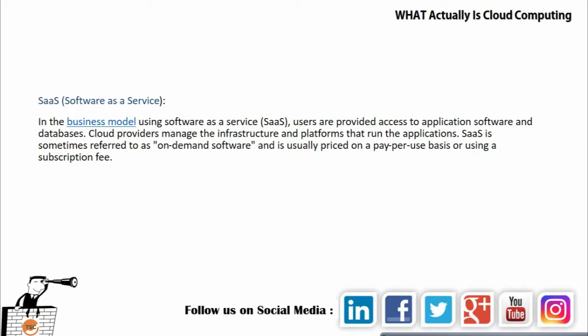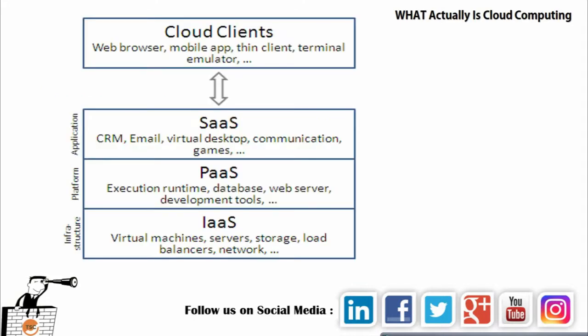The final service model is Software as a Service. In SaaS, users are provided access to application software and databases, while cloud providers manage the infrastructure and platform. SaaS is sometimes referred to as on-demand software and is usually priced on a pay-per-user basis or a subscription-based fee. A great example is an applicant tracking system where a service provider creates the software, puts it online, and companies register to manage their entire recruitment process, paying per user on a monthly basis.